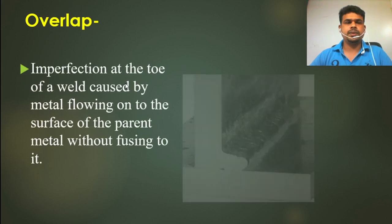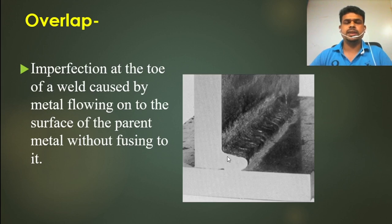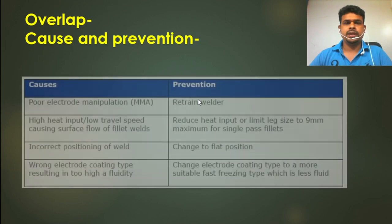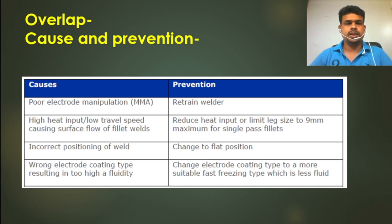Another problem is overlap. Overlap is the imperfection at the toe of a weld caused by metal flowing onto the surface of the parent metal without fusing. Looking at the downside, if the melting metal flows more than expected downward, an overlap forms. Cause: poor electrode manipulation — retrain the welder. High heat input or low travel speed causing surface flow in fillet welds — reduce heat input or limit leg length to 9 mm maximum for single-pass fillets.